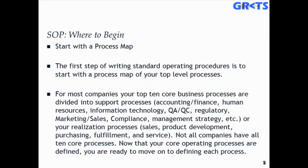You want to start with a process map — a visual. A visual depiction is always nice to have. The first step of writing SOPs is to start with a process map of your top-level processes. For most companies, your top ten core business processes are divided into support operations — including accounting, finance, HR, IT, QA, QC, regulatory, marketing and sales, compliance, management strategy, and so forth. Not all companies have all ten core processes — it's going to vary.